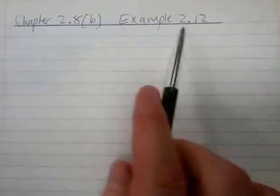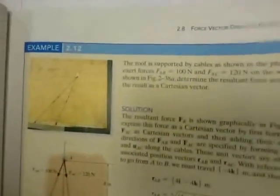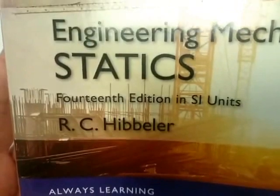We're going to carry on with chapter 2.8 and look at example 2.12 in this video. Just a reminder that we are working in the 14th edition. I know in the first video I said 13th edition, but at that stage I didn't even know we were using a 14th edition. But now I do, and now I'm using the 14th edition. So it's example 2.12 in the 14th edition.